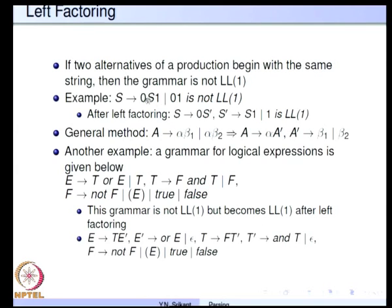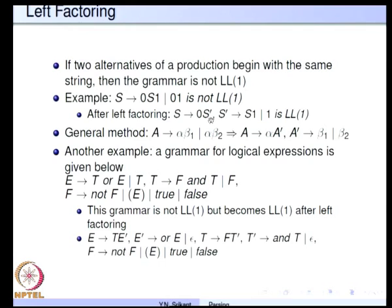For example, here 0 is the common portion, so that is factored out and a new non-terminal S prime is introduced for the rest. S prime goes to S 1 or 1, which are the remaining alternatives. This grammar is definitely LL1. Using this transformation, it is sometimes possible to change a grammar which is not LL1 to LL1 form.